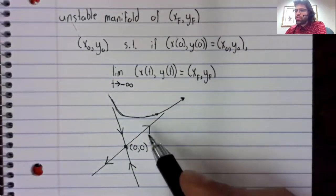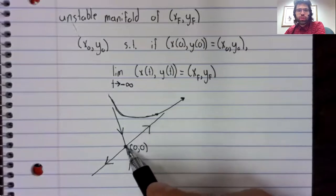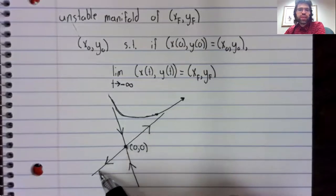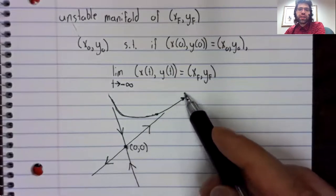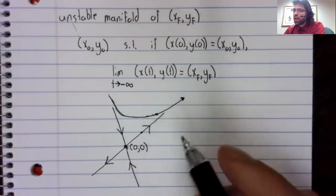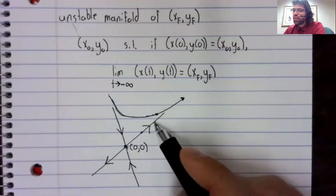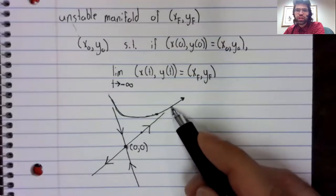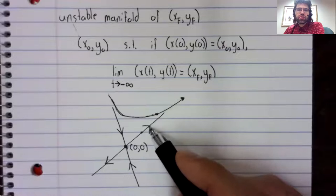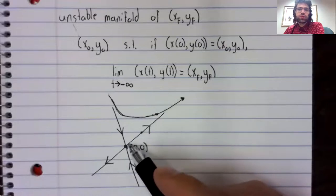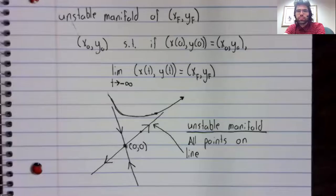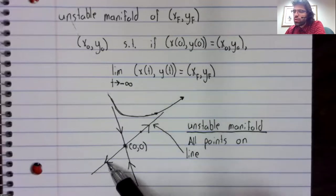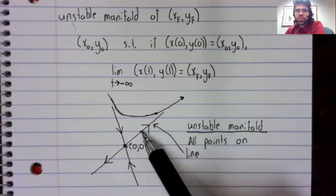The unstable manifold of this fixed point is precisely this line. If you have a point on this line, it goes straight away from the origin, and if you reverse time, it goes straight towards the origin.